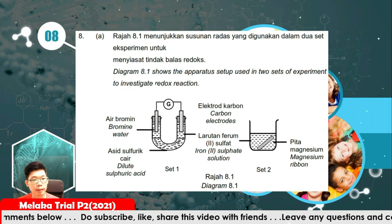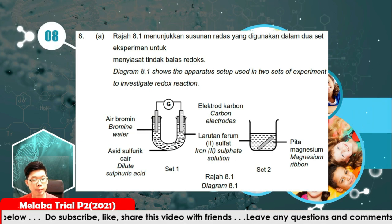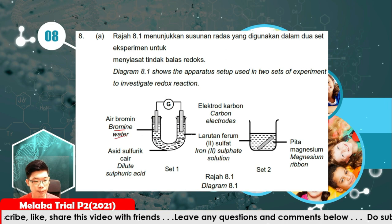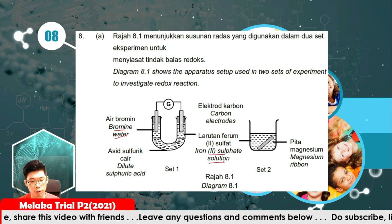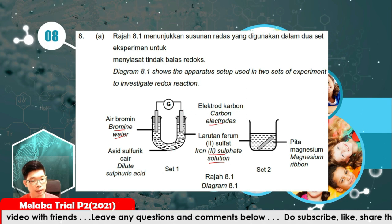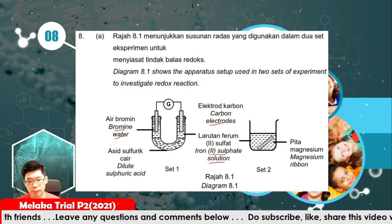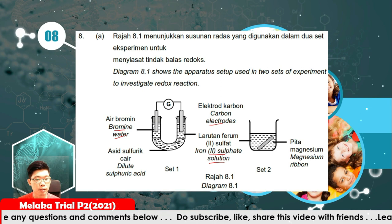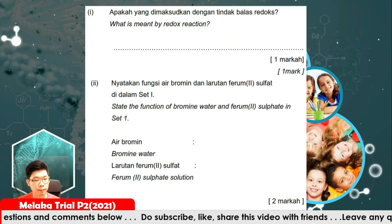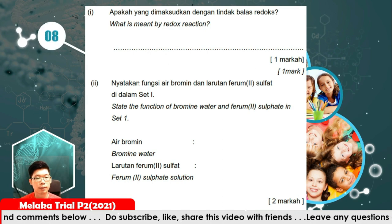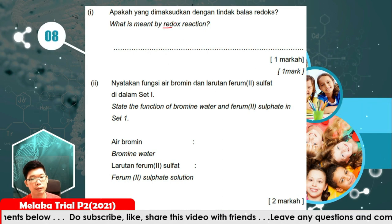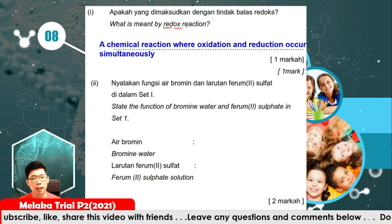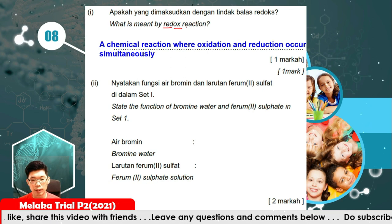Question number 8. The diagram shows apparatus for two sets of experiments to investigate the redox reaction. Set 1 uses bromine water and iron sulfate solution with a carbon acid cell. Set 2 uses magnesium ribbon placed into iron sulfate solution — a displacement reaction. Redox reaction means a reaction in which oxidation and reduction occur simultaneously.